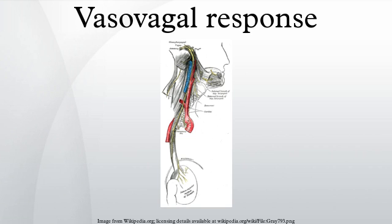Fainting occurs with the loss of oxygen to the brain. The autonomic nervous system's physiologic state leading to loss of consciousness may persist for several minutes, so if sufferers try to sit or stand when they wake up, they may pass out again. The person may be nauseated, pale, and sweaty for several minutes or hours.